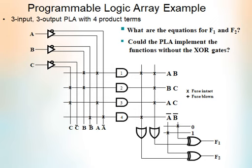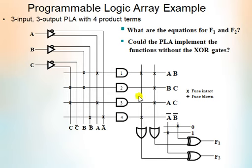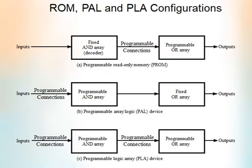This is the example circuit for the programmable logic array. Here A, B, C are the input buffers. As mentioned earlier, programmable logic array has programmable AND gates and also programmable OR gates. We can represent the programmable AND gates and programmable OR gates using a single line, and the cross mark indicates the fuse between the input buffers.